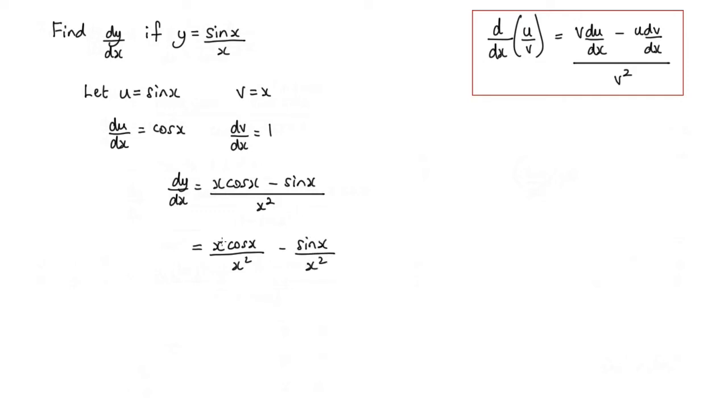Now if you notice, this x here will cancel with one of these, which will leave me with cos x over x minus sin x over x squared.